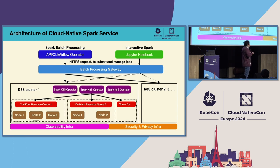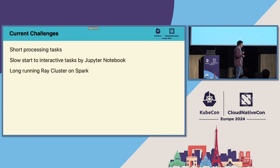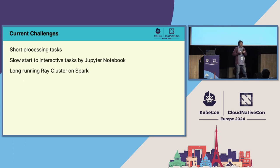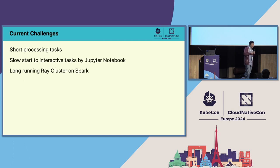We have been leveraging this cluster to support large-scale production workloads on our internal platform for several years and made a lot of internal customizations and refactors to this open-source Spark Kubernetes operator. However, we are still facing some new challenges. First, we have a lot of very short-processing Spark applications. We get many requests from end users requiring small applications to finish in only around three to four minutes, with intervals between each Spark application of less than 30 seconds.